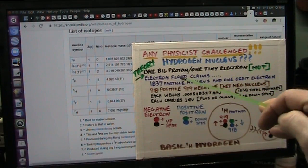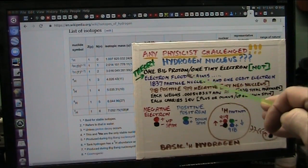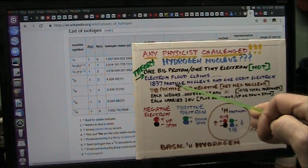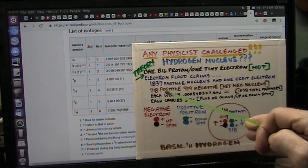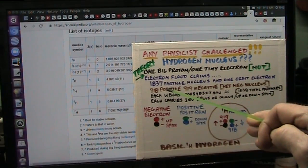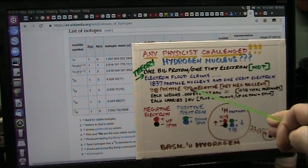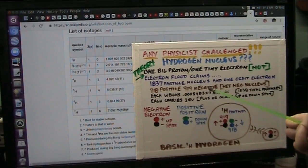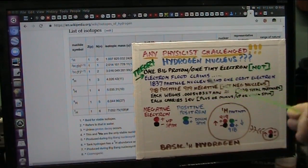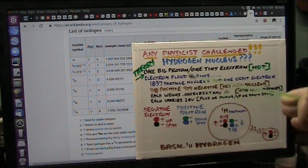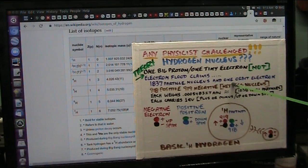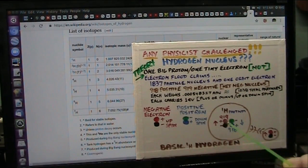We have one gigantic proton and in that gigantic proton there's 1837 particles, of which 918, which is half approximately, are positive. Then there's 919 negatives. And what does that mean? Why is there one more negative? That negative keeps the one additional negative, that is the electron spinning around in the cloud, right there, that keeps that electron away from the nucleus, because the nucleus has one additional of those, it pushes it away.